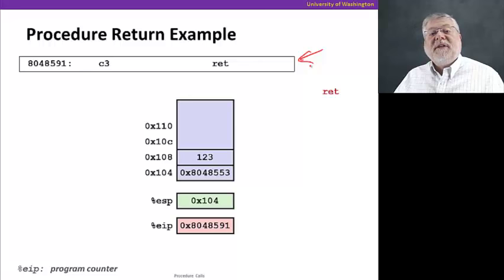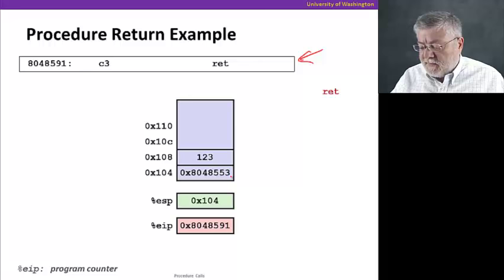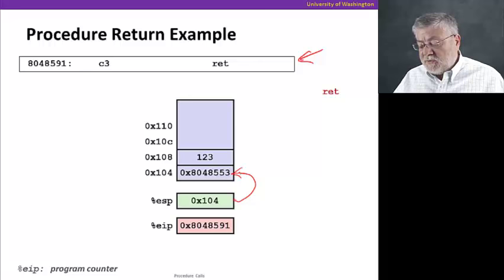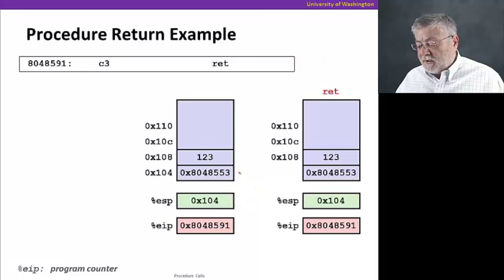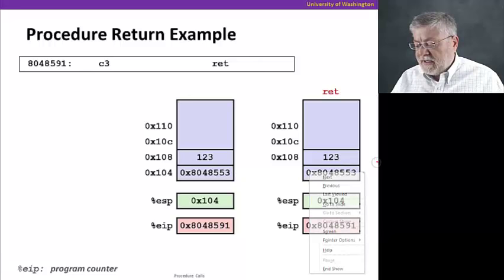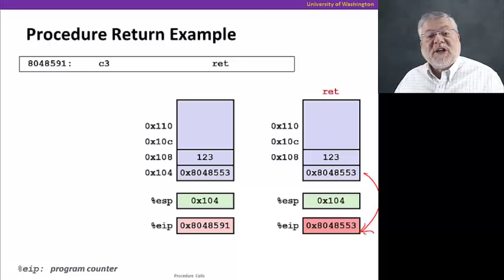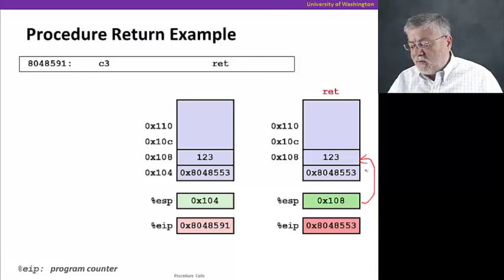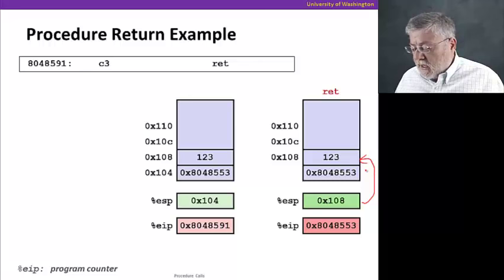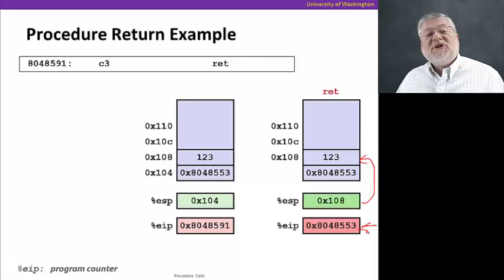We're now going through that entire set of instructions for the callee procedure, and finally we'll reach a return instruction at the end. When we hit that, the stack will hopefully have returned to the same position, so the stack pointer is pointing to that saved return address. What we're going to do is pop that stack and get that value back so we can go to that location next. The return pops this value from the stack and stores it into the instruction pointer. The stack pointer adjusts back to 108, pointing to where it was before we called this procedure, and our next instruction is that push instruction following the call.